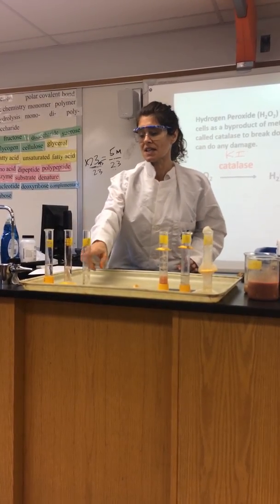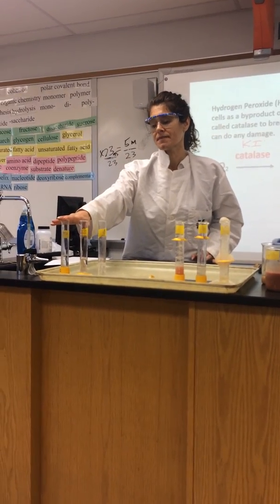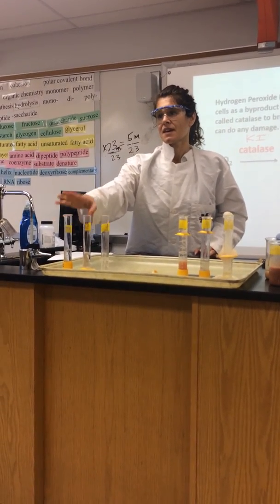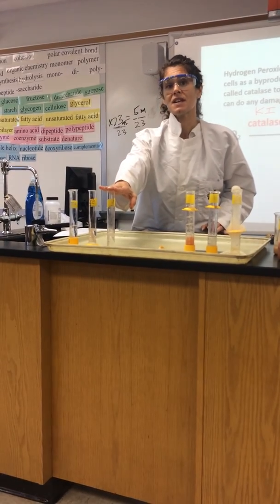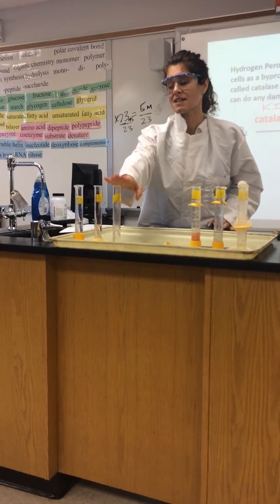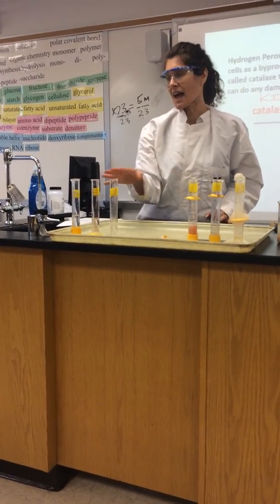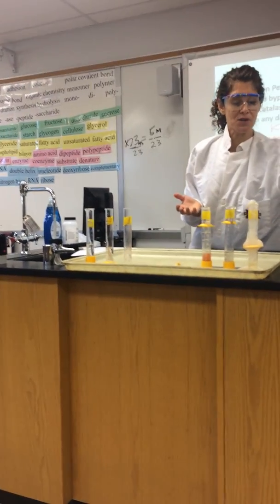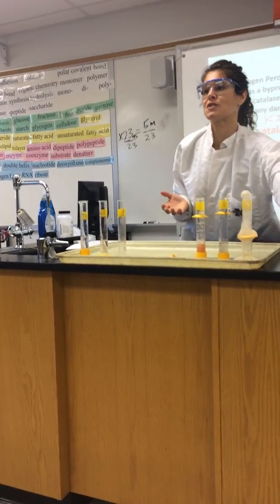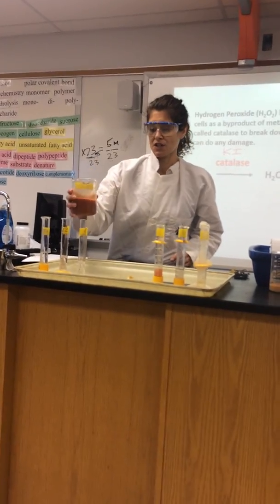Now we're going to move on to the next set of experiments, which is the pH differences. So in D, E, and F — F is neutral, D has acid, and E has a base, and also some hydrogen peroxide. For this one, I'm going to use fresh liver for all of them, so the only variable is the pH and temperature is not an issue.